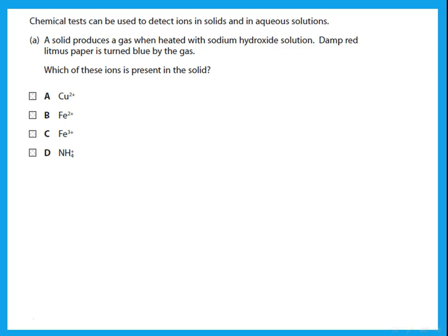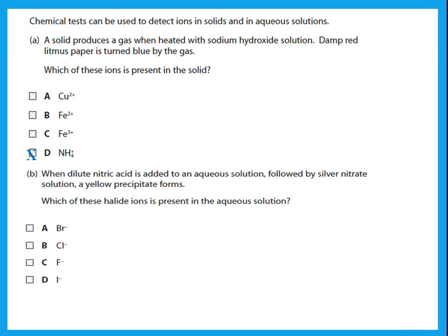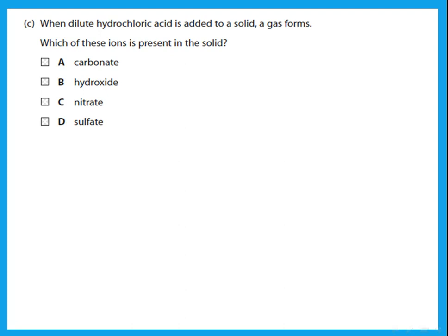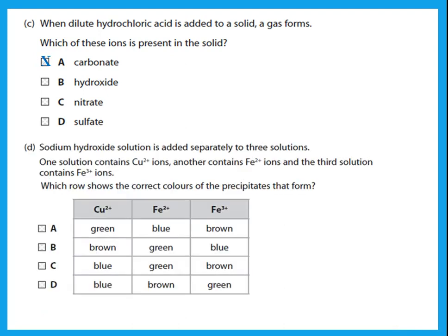A solid produces a gas when heated with sodium hydroxide solution, and damp red litmus paper is turned blue by the gas. This is the test for ammonium ions. When dilute nitric acid is added followed by silver nitrate and a yellow precipitate forms, this indicates iodide. When dilute hydrochloric acid is added to a solid and a gas forms, this indicates carbonate ions.